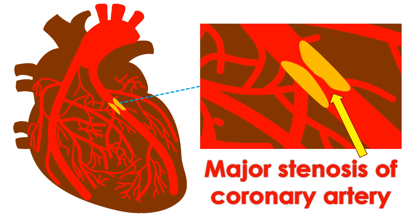The pain can radiate to the neck, lower jaw, arms, and upper abdomen. Occasionally, pain may be felt only at these regions without pain in the chest, in which case it is known as an anginal equivalent.